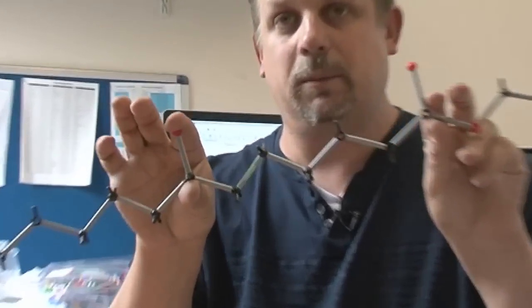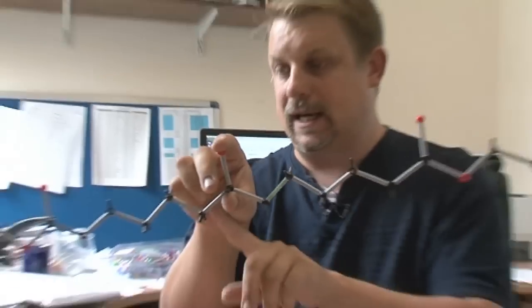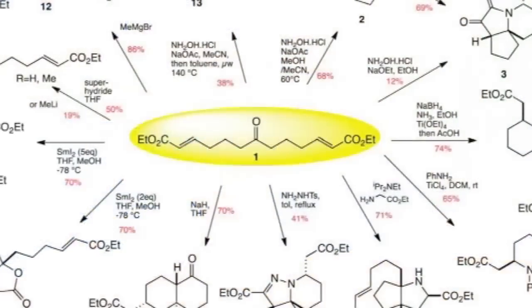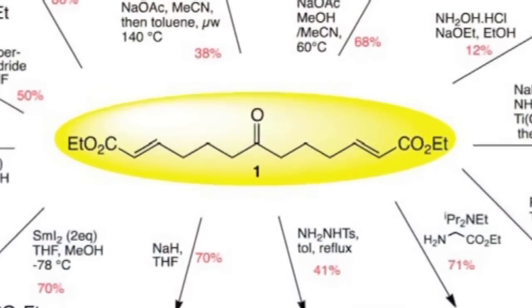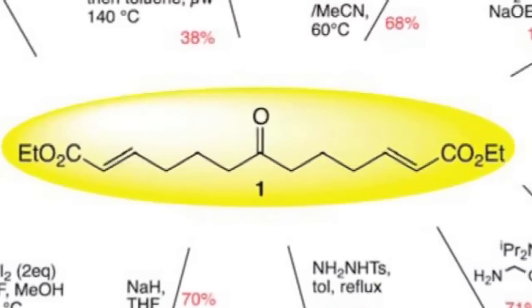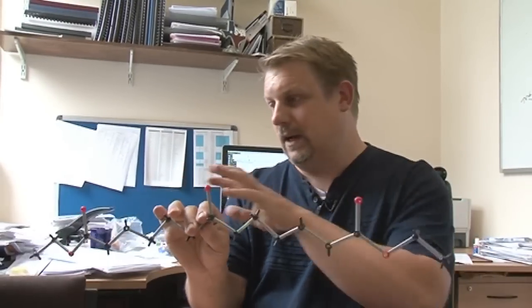Here we have two ester groups at the end, and we've got a simple ketone in the middle. And this is just a chain connecting these two side chains. It's called 6-keto-undecadiene-dione diethylester, or the ketodiester, as we like to call it.